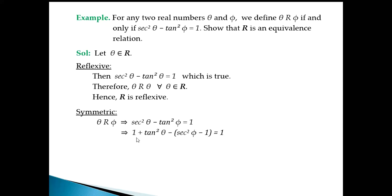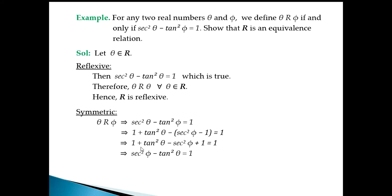Substituting: (1 plus tan²θ) minus (sec²φ minus 1) equals 1, which gives 1 plus tan²θ minus sec²φ plus 1 equals 1. Simplifying: 2 minus 1 equals 1, so sec²φ minus tan²θ equals 1. This shows φ is related to θ. Therefore R is symmetric.